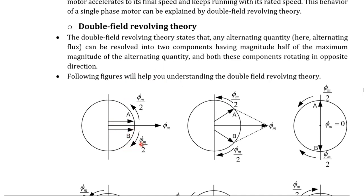The A vector and B vector are equal in magnitude, φm by 2, but rotate in opposite directions. One vector rotates in the forward (counter-clockwise) direction, and the other rotates in the opposite direction. This alternating quantity is thus divided into two vectors — A vector and B vector — each of magnitude φm by 2, rotating in opposite directions.